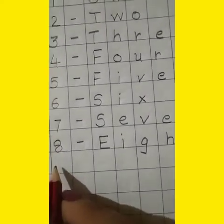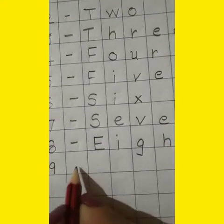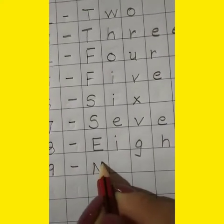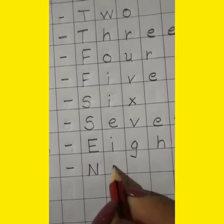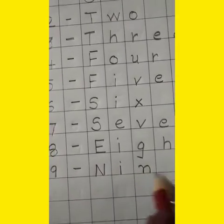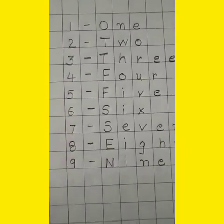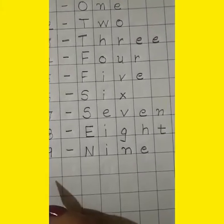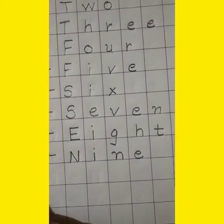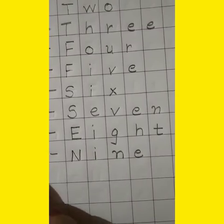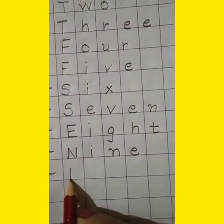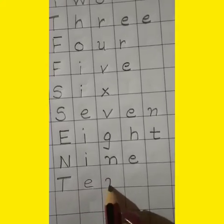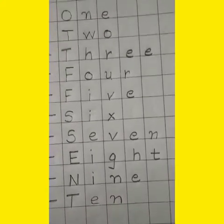Then 8 after which number comes? 9. Make a dash. First letter should be capital — N-I-N-E. 9. And then last number is 10. First letter should be capital — T-E-N. 10.